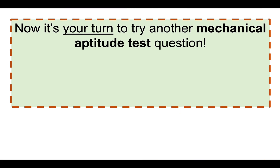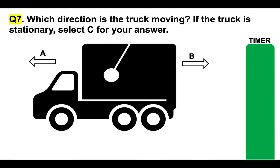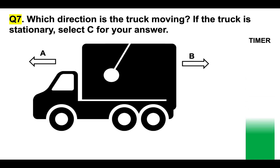Now it's your turn. Please put your answer to question 7 in the comments section below the video for marking. Which direction is the truck moving? If the truck is stationary, select C. Is it moving in direction A or B? The clue is to look at that ball on a rope hanging in the middle of the truck.